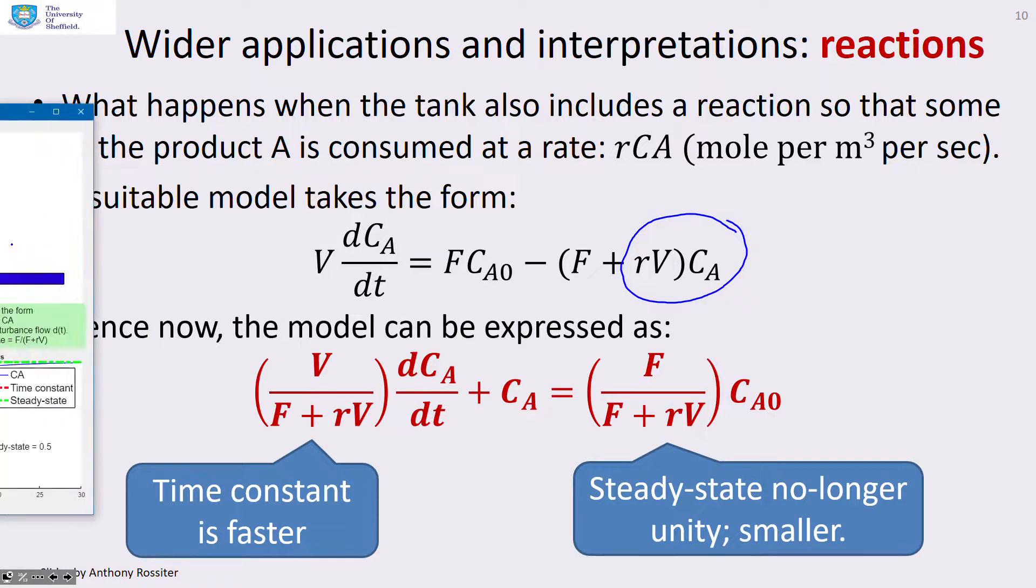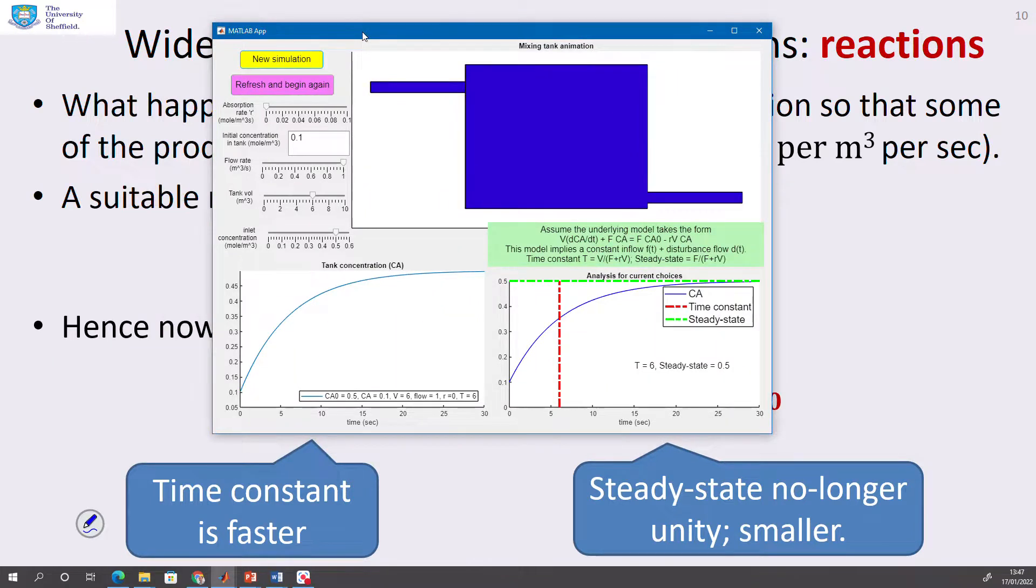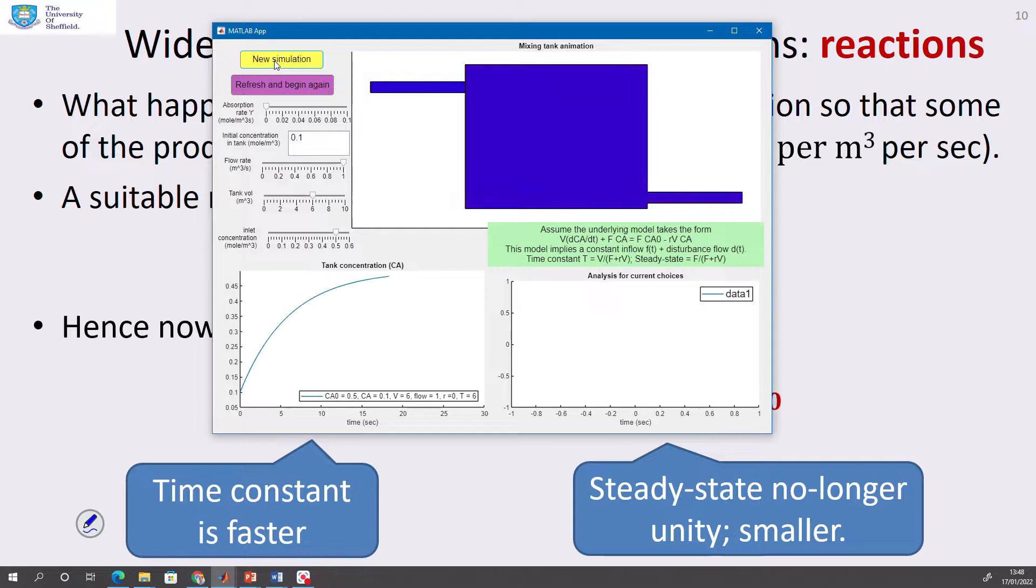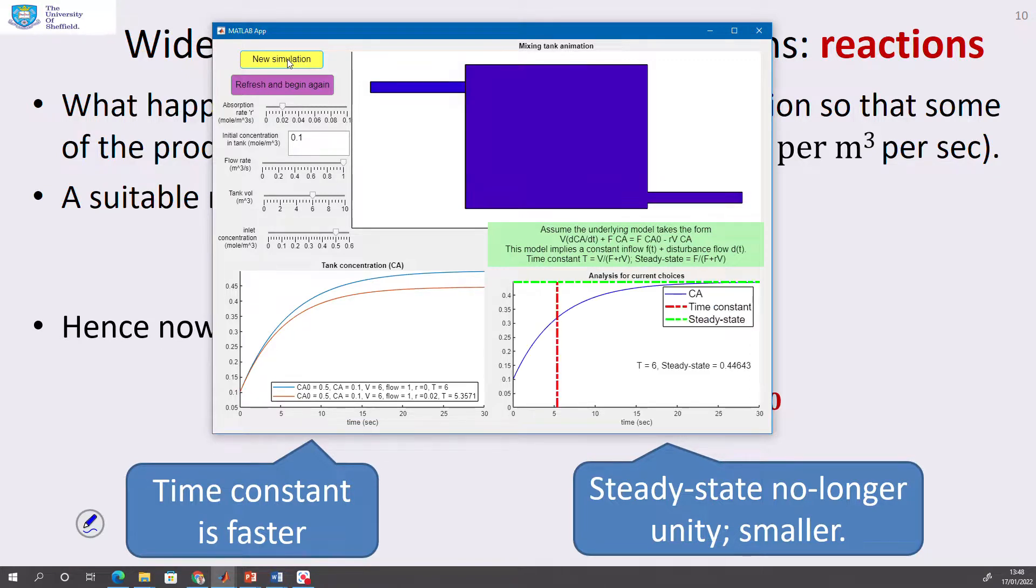You'll notice this top slider says absorption rate R and it's currently set at zero. So let's run that with the absorption rate of zero. You can see what time constant we've got and what gain we've got. So we've got a gain of 0.5, a time constant of six. So now let's increase the absorption rate to 0.02 and run the simulation. What do you notice? The steady state is smaller, but the time constant, look down here in this bottom there, the time constant is faster.